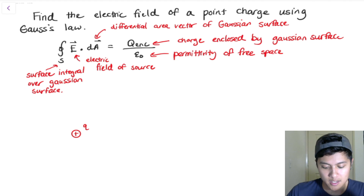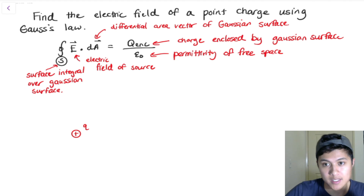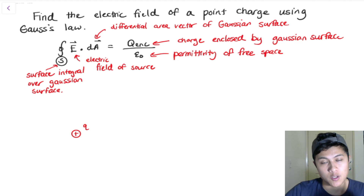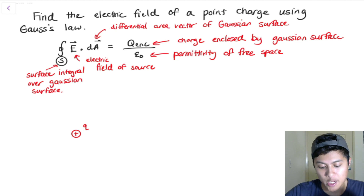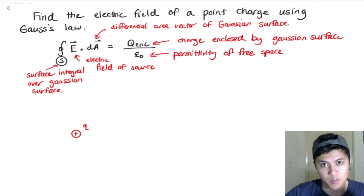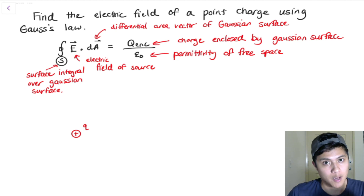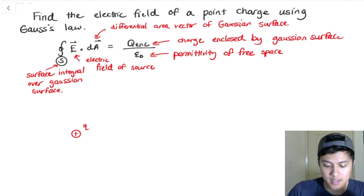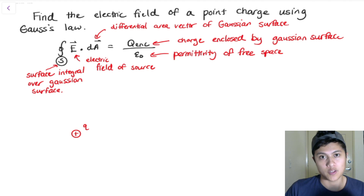If you forgot what Gauss's law is, it's written here with the equation and captions on what everything means. The S here means it's a surface integral — we're doing an integral over a surface known as the Gaussian surface. E is the electric field of the source, in this case our point charge Q. We also have the differential area vector dA for whatever Gaussian surface we pick. On the right-hand side we have the charge enclosed — the charge encased by that surface — divided by epsilon naught, the permittivity of free space.